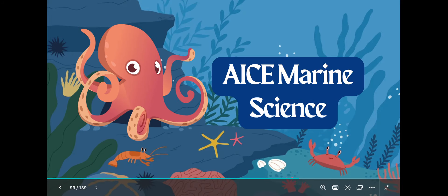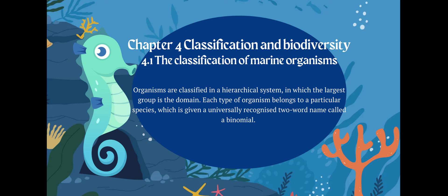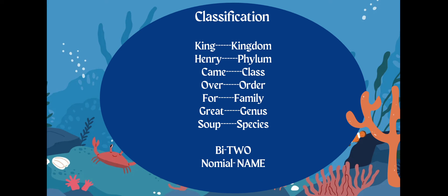Today, here we go with topic number four. Topic number four is all about classification and biodiversity. Lots of diagrams come from chapter four. So I cannot stress the importance of knowing where certain structures are on organisms.